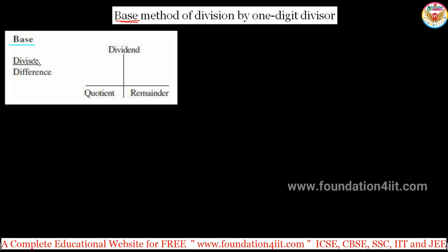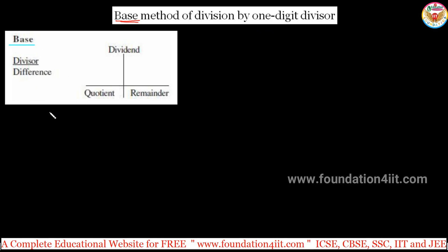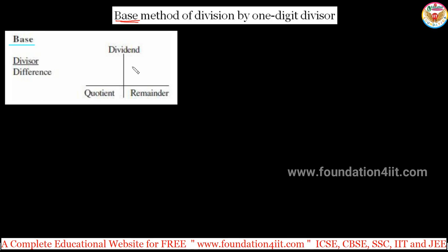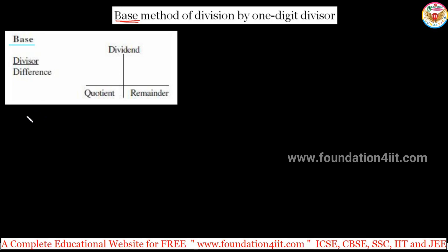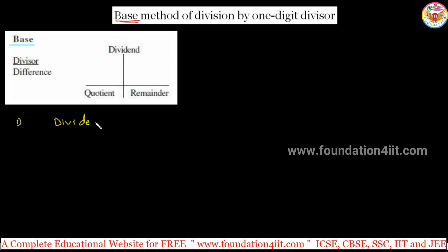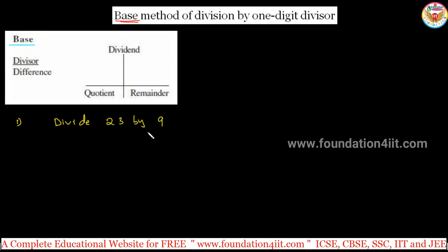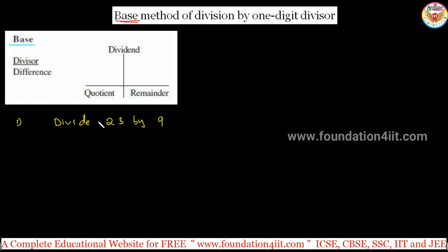First you have to choose the base, and know the dividend, quotient, remainder, divisor, and difference. Let me take one example and explain. Generally, we divide the dividend into two parts — the RHS will contain as many digits as the number of zeros in the base. Let's take an example to get a clear idea. The question is: divide 23 by 9. Let us start with easy sums so you can get the concept clearly, then apply to any number of questions.